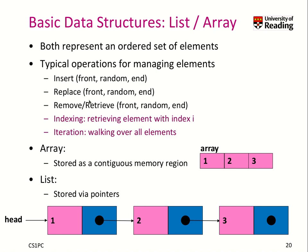Let's have a look at some basic data structures: the array, which we know already, and the list. Both represent an ordered set of elements. Typical operations include insert at front, random position, or end, replace at front, end, or random location, remove or retrieve something. You can index an element, retrieve an element like the fifth element, or walk over all elements through iteration.